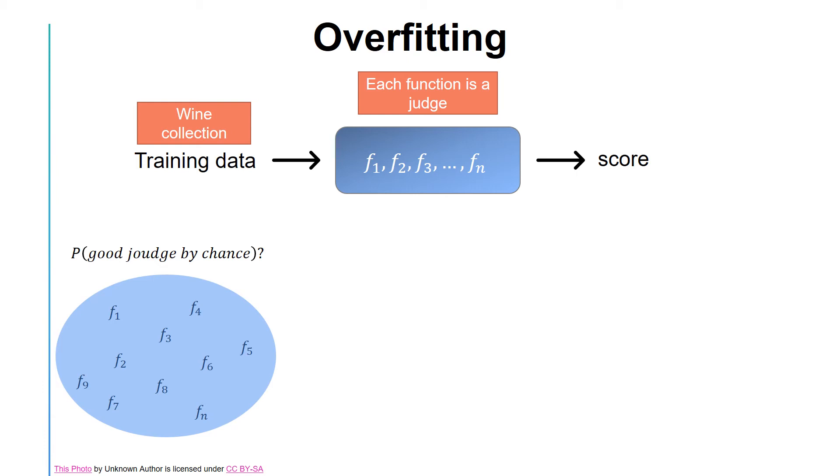The number of judges is equivalent to the number of functions in your machine learning algorithm. And having a large number of functions means having a richer, more flexible model, or equivalently, a more complex model.